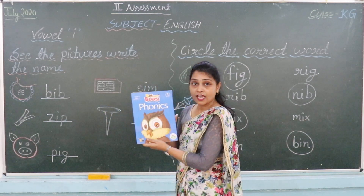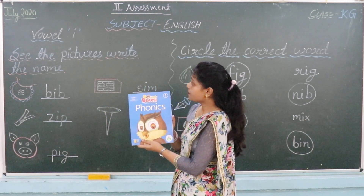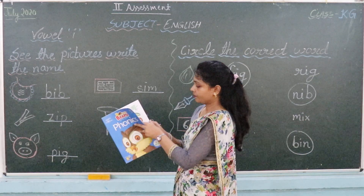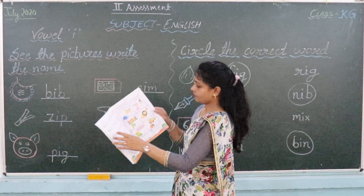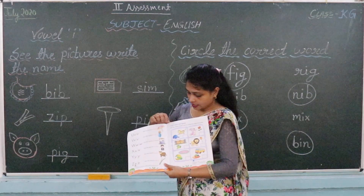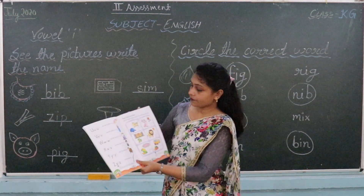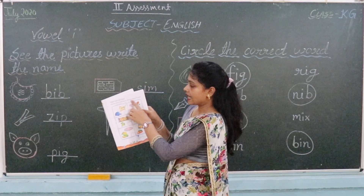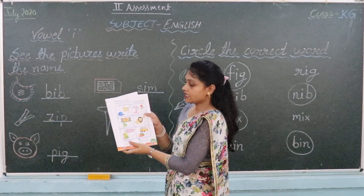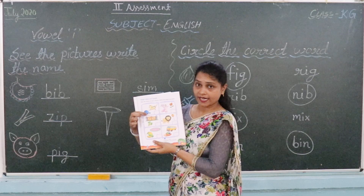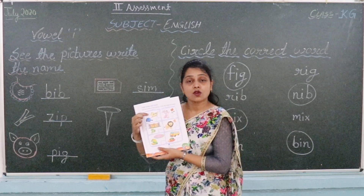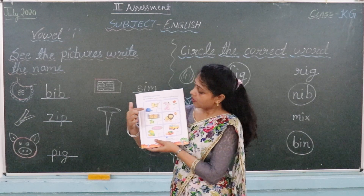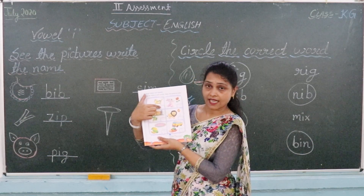This is the English textbook. In which you can do page number 9 or 10. What is this? Cat and Cat. What is the first letter? C. So you can do C.